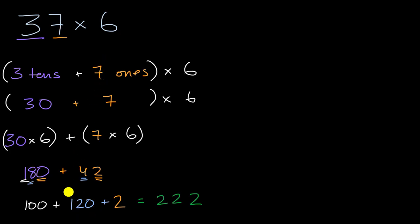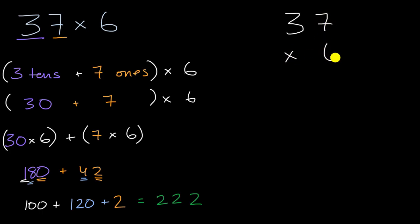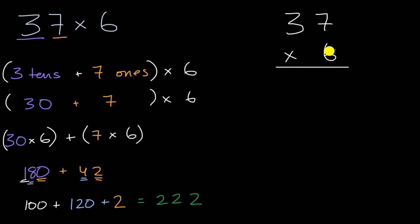Now this isn't the only way to approach it. We could write things so it's a little bit easier to keep track of. Let's say 37 times six, and I'll designate one column for the ones places, one column for the tens places, and if hundreds places show up I'll write it over there — just to keep track of things. I can do the same thing: take the six and say this is the same as three tens times six plus seven ones times six.